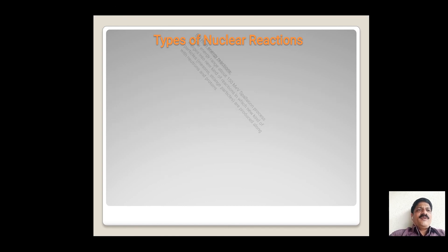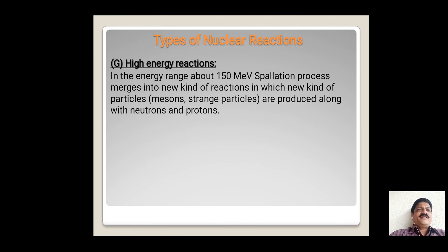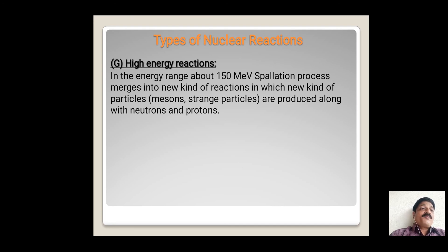The next type of nuclear reaction is high energy nuclear reactions. In the energy range of about 150 MeV, the spallation process merges into a new kind of reaction, in which new kinds of particles — mesons and strange particles — are produced along with neutrons, electrons, and protons.